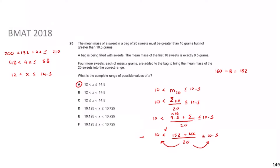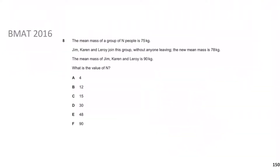Welcome back. Previously we looked at BMAT 2018 question 20, really about means mixed with inequalities — the BMAT likes mixing different topic areas together. Now we move on to the next question: BMAT 2016. The mean mass of a group of n people is 75. Jim, Karen and Leroy join the group without anyone leaving; the new mean is 78. The mean mass of Jim, Karen and Leroy is 90. What is the value of n?